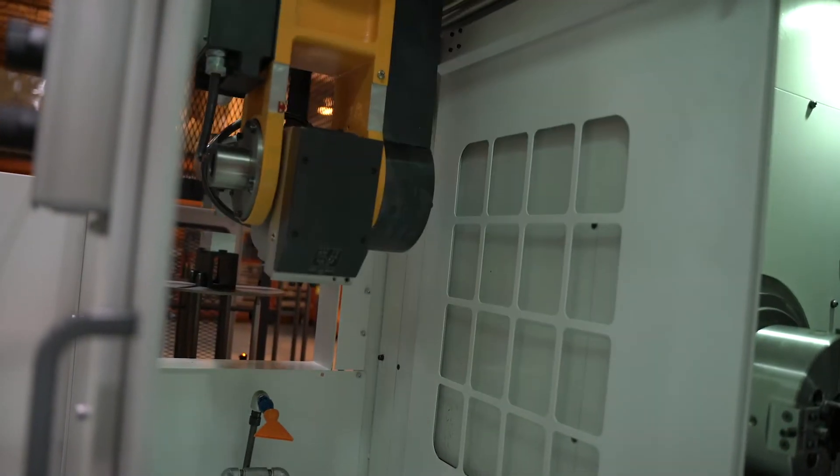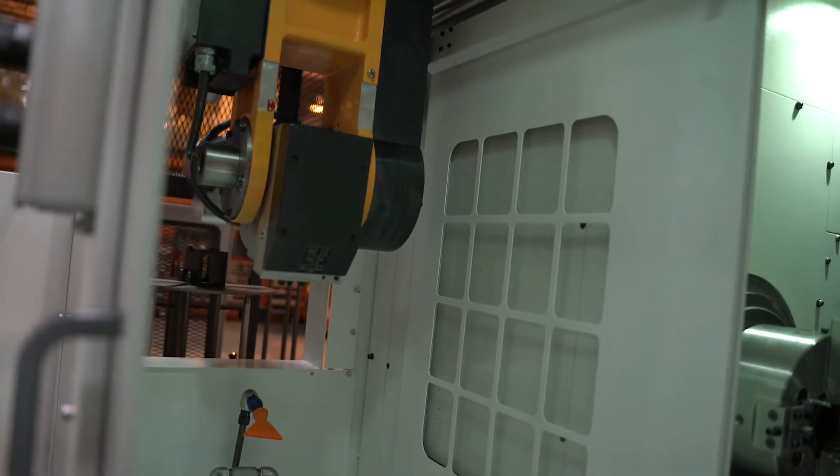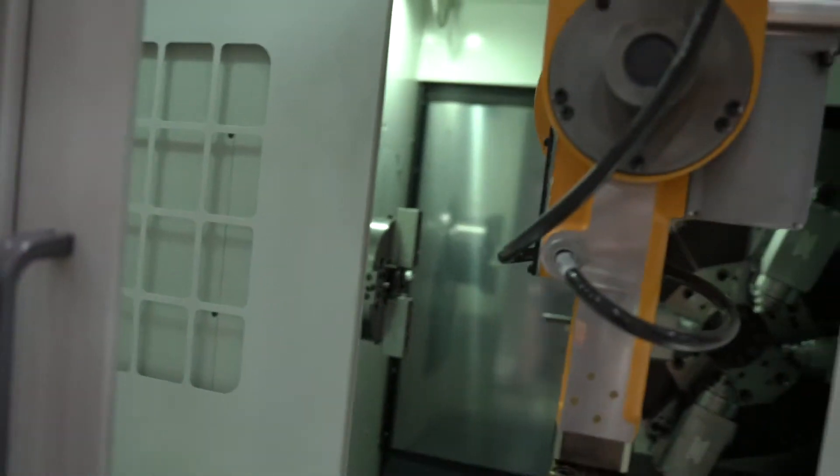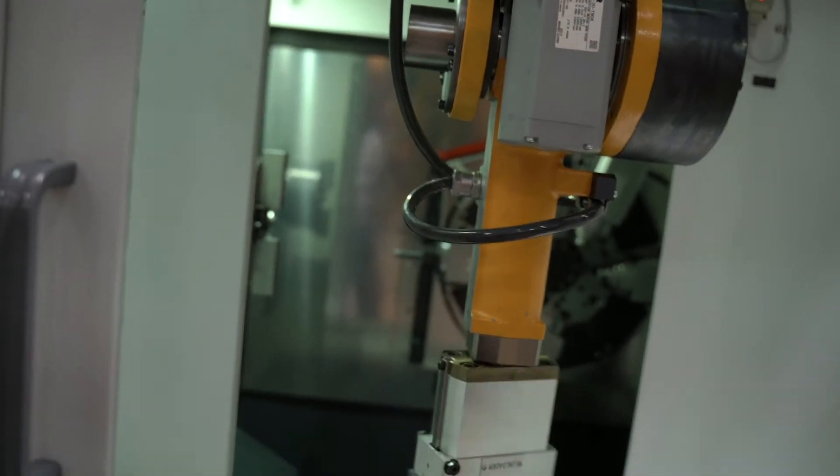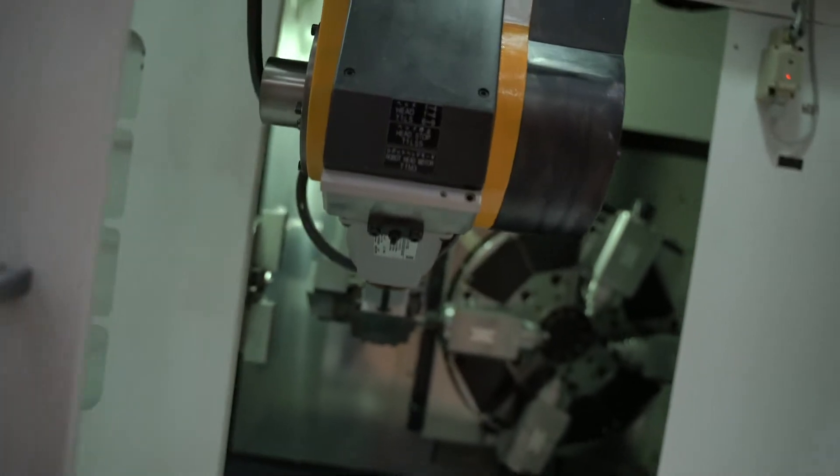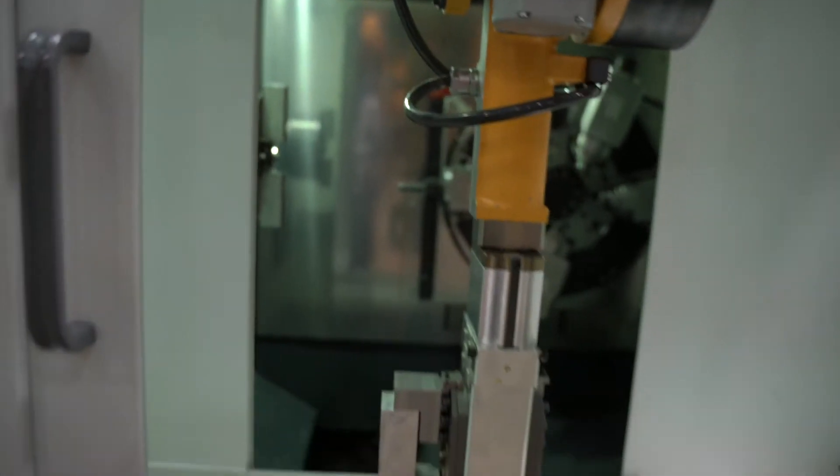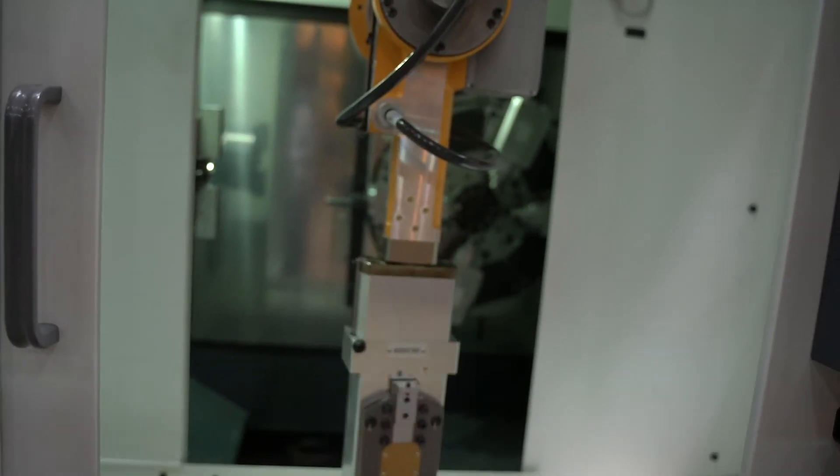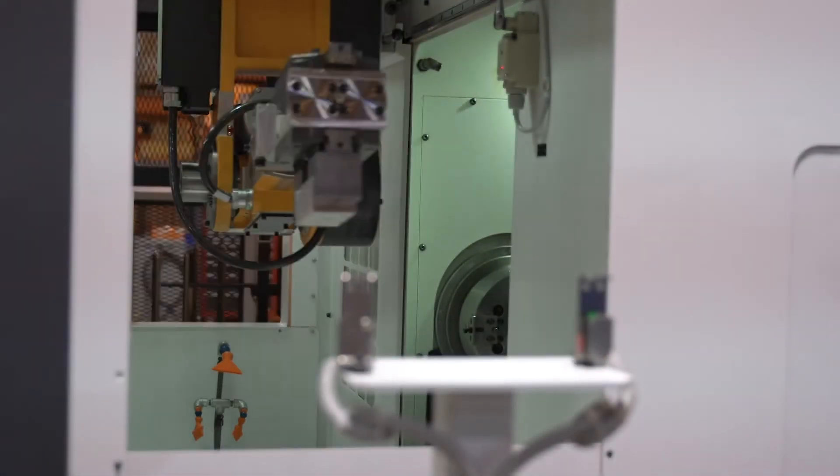This HM3400 is configured with our underarm loader as you can see here. The end of arm is a two-jaw at this point and it's hydraulic clamping. This way you're going to get positive load and unload of your components for accuracy and repeatability.